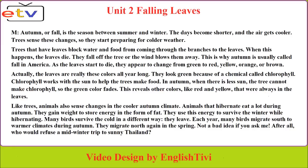As the leaves start to die, they appear to change from green to red, yellow, orange, or brown. Actually, the leaves are really these colors all year long. They look green because of a chemical called chlorophyll. Chlorophyll works with the sun to help the trees make food.